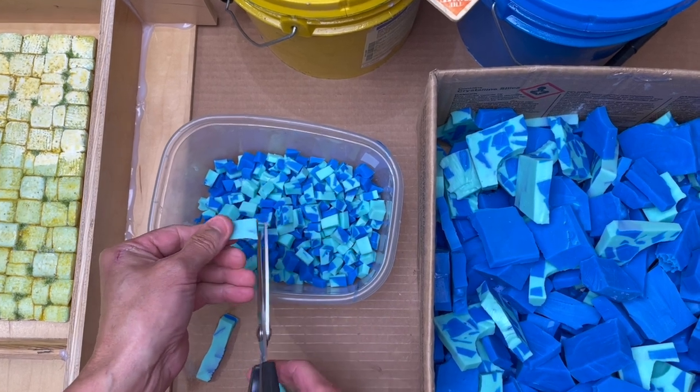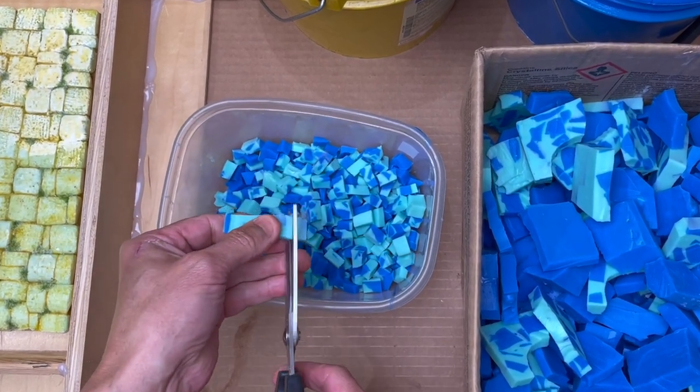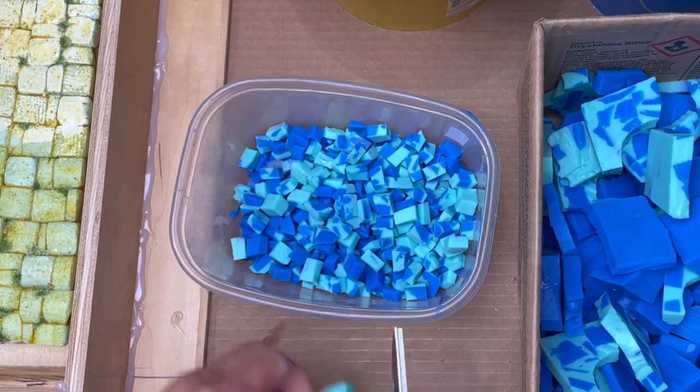Whenever I'm done with a mold I'll chop it up into medium and small sized pieces to recycle them into new molds. It's a great way to save money because silicone is not cheap. It's also a great way to thicken up your mold.